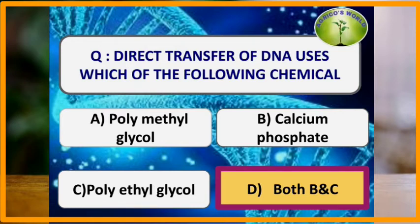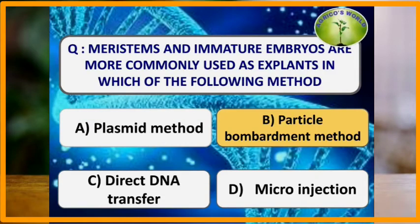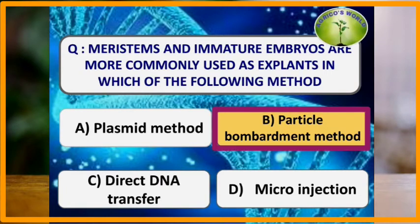Direct transfer of DNA uses which chemicals? The direct transfer of DNA uses polyethylene glycol and calcium phosphate. Meristems and immature embryos are more commonly used as explants in the particle bombardment method.